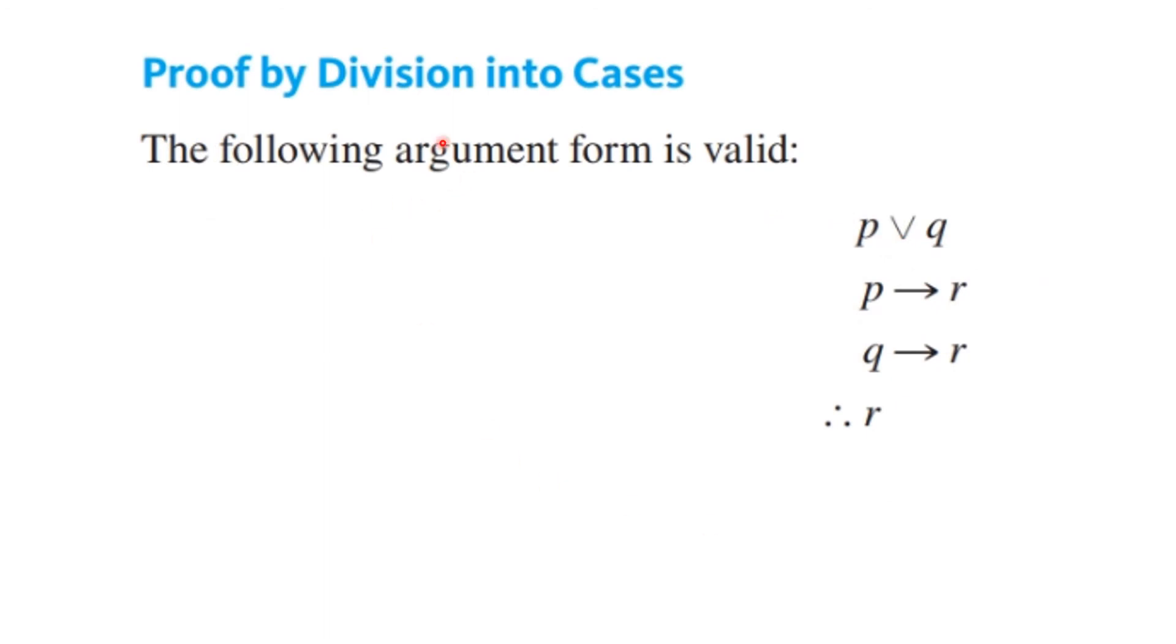Sometimes this is, and we call this division into cases, another argument form that is valid. If P or Q is true, and P implies R, and Q implies R, then I have to have R, and you can actually argue through that with words. If P or Q is true, one of them has to be true. So either this one is true or this one is true. Actually all of these are true, but since this one is true, either P or Q has to be true, and that means that R has to be true because of the implications.